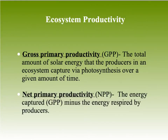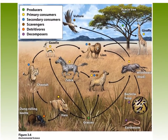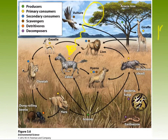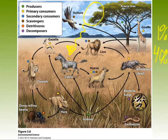If we look at an African savanna, we know that the sun is going to shine down on all the different types of grasses. Those grasses are going to capture about 1% of the total solar energy coming down on that ecosystem, and only about 40% of that is actually going to be used for growth and reproduction of those producers.